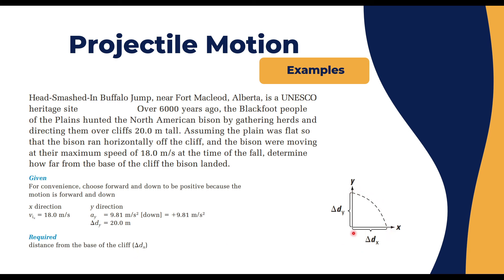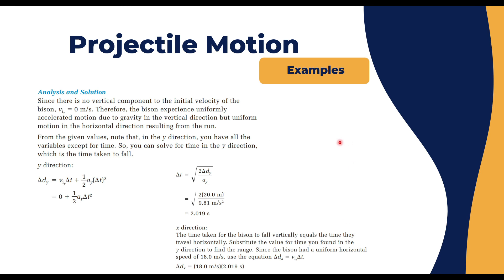As you know, let's go with the analysis and solution. To find Δd_x, we need v_ix multiplied by Δt. But we don't know Δt. However, we have Δd_y, we have v_iy, and we have a_y, so we can find Δt from here. So Δd_y equals v_iy multiplied by Δt plus 1/2 a_y Δt².